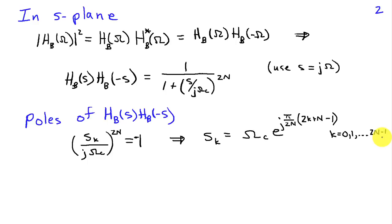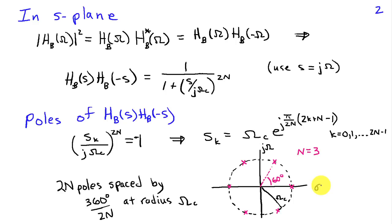Of course, there's 2n roots of minus 1, and that's how we get all of these poles. If you sketch those in the s-plane, with sigma on the real axis and j omega on the imaginary axis, it turns out that there's 2n poles associated with this function, and they're spaced by 360 degrees divided by 2n. And the radius of those poles is at omega c. So, for example, if n were equal to 3, we would have the poles indicated by the magenta x's here, and they would be separated by 60 degrees, and they'd be on a radius of omega c.